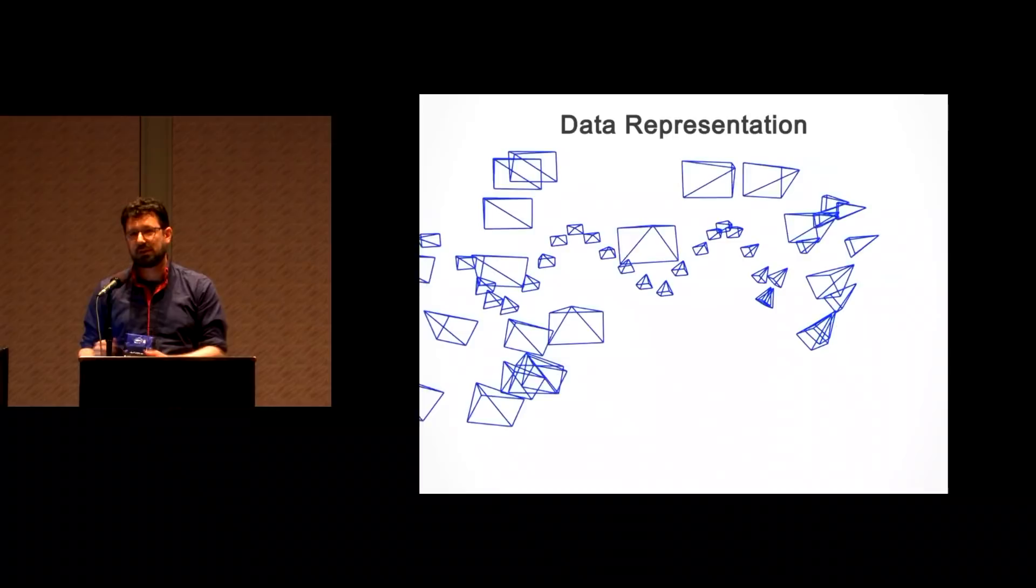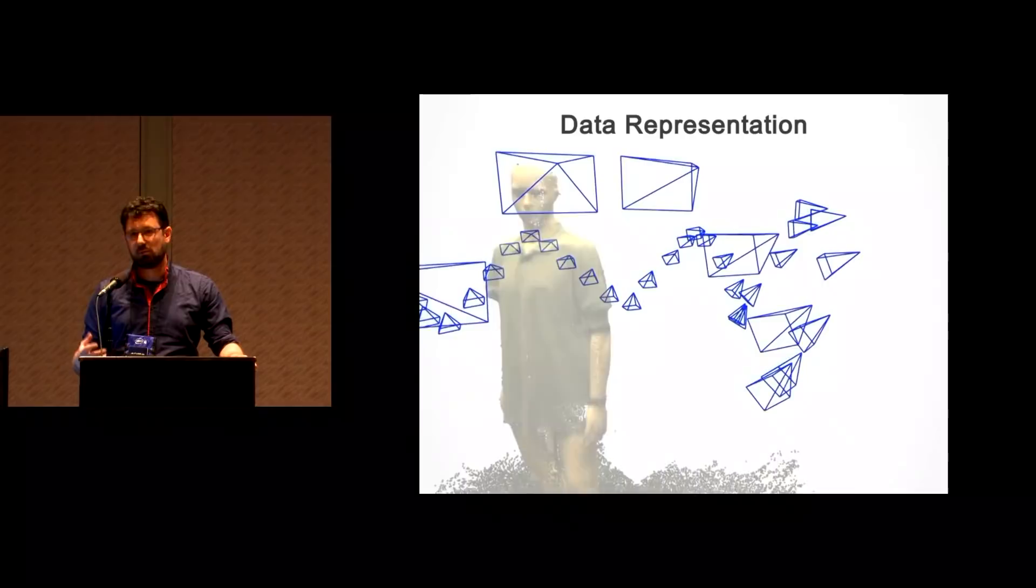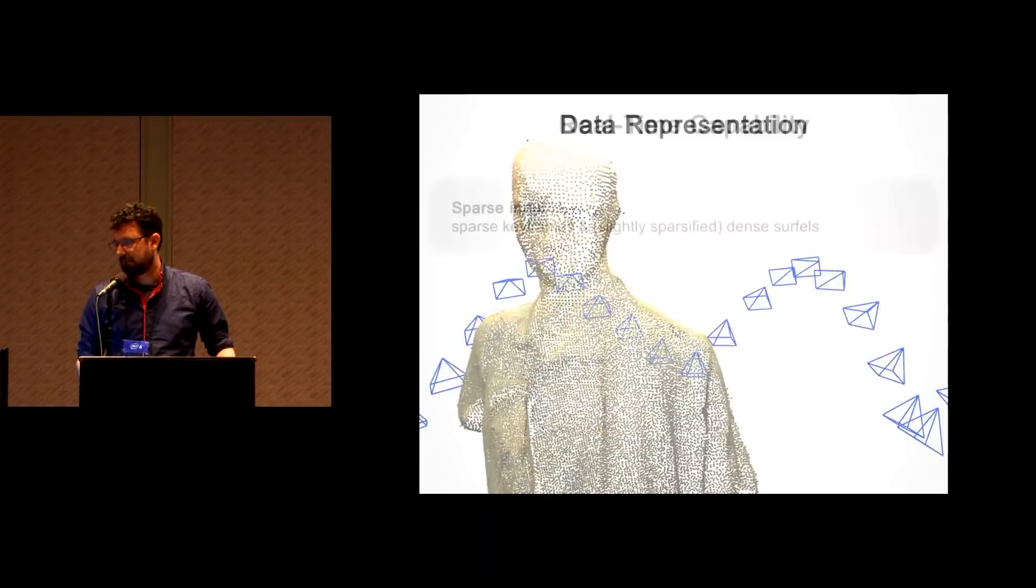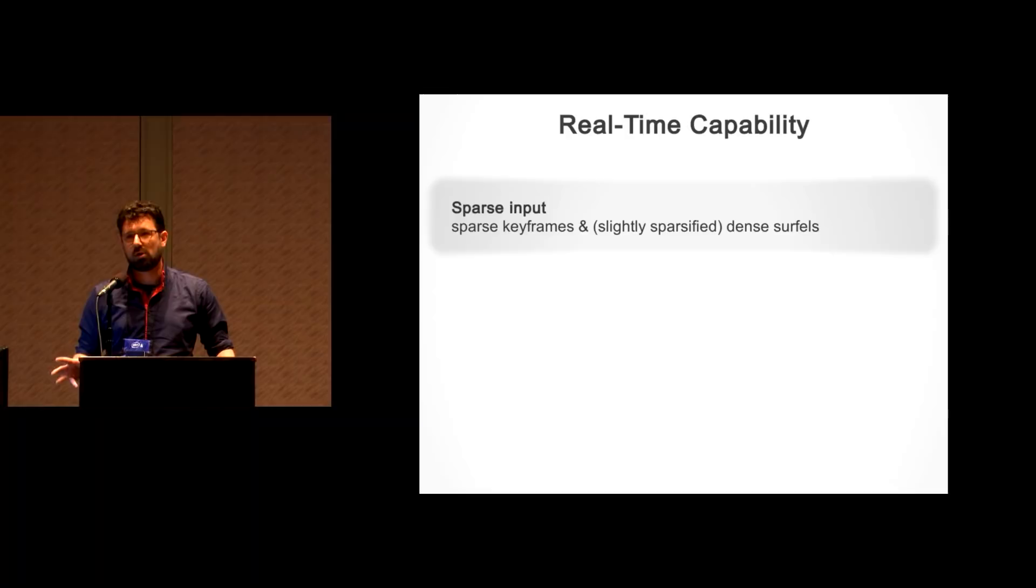And that naturally leads to the question, is it feasible at all to run bundle adjustment for direct Slam? And our answer to this is yes, and this is where our Batslam method comes into play. So we represent the scenes through a set of keyframes, where each keyframe observes a set of surfels which model the scene geometry. We chose surfels rather than voxels to be able to reconstruct the scene at arbitrary detail. In order to achieve real-time performance, we sparsify the input, we perform alternating optimization to keep each step efficient, and implemented the whole approach on a GPU.